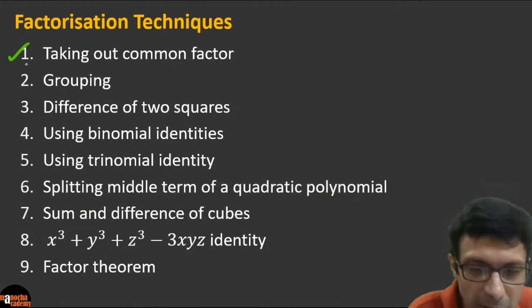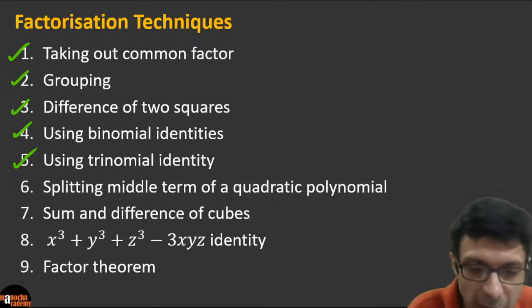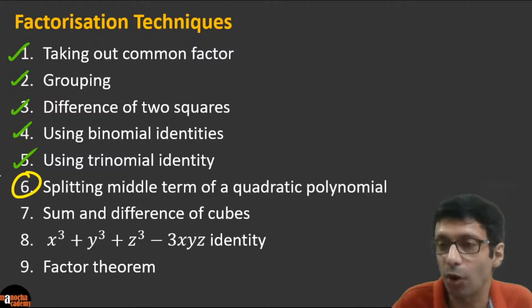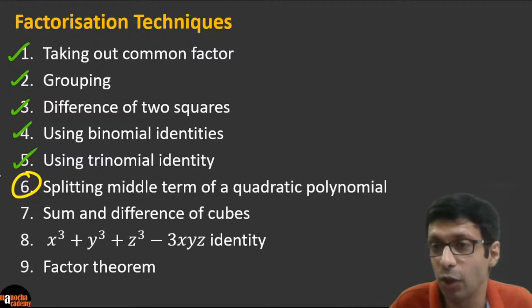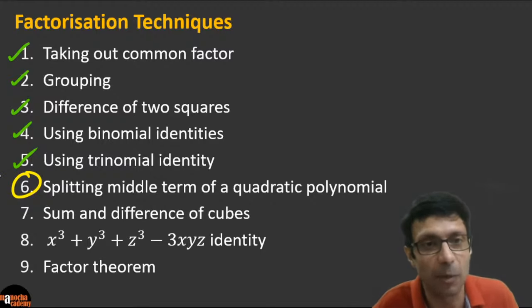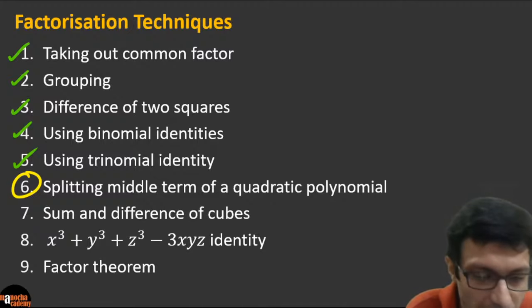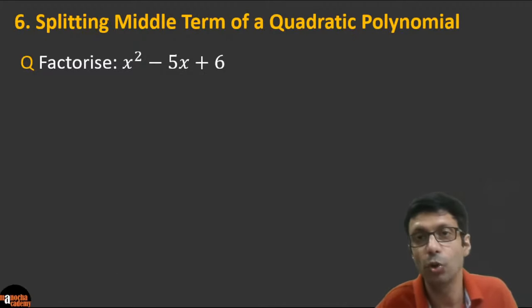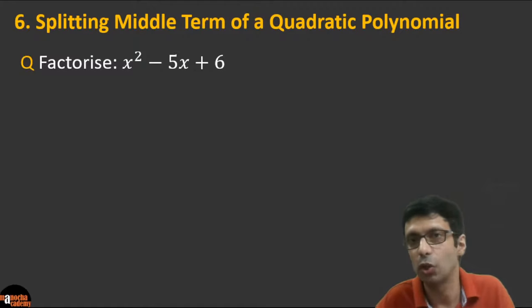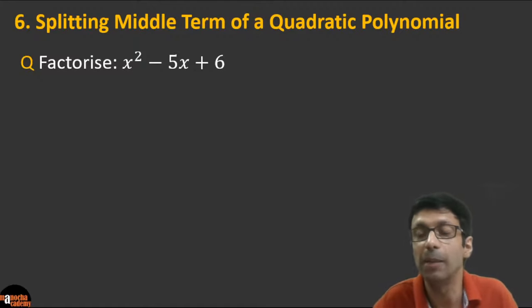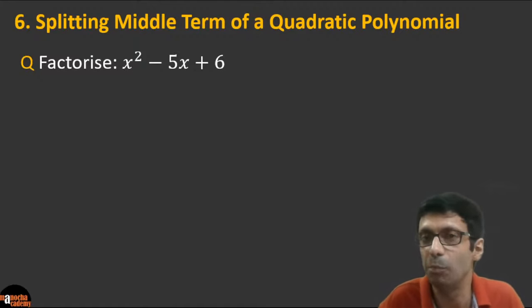We've done five techniques so far: common factor, grouping, difference of two squares, binomial identity, trinomial identity. Now let's look at technique 6: splitting the middle term of a quadratic polynomial, also known as middle term breaking.